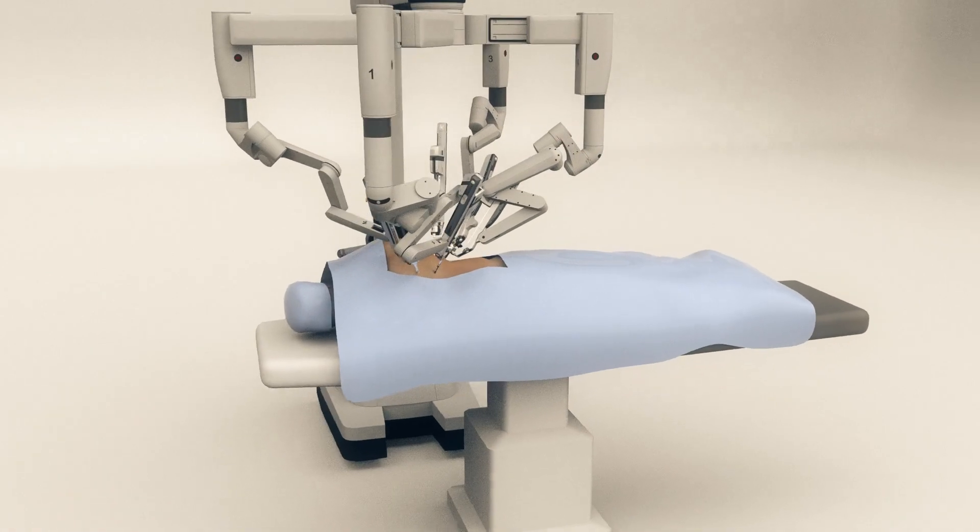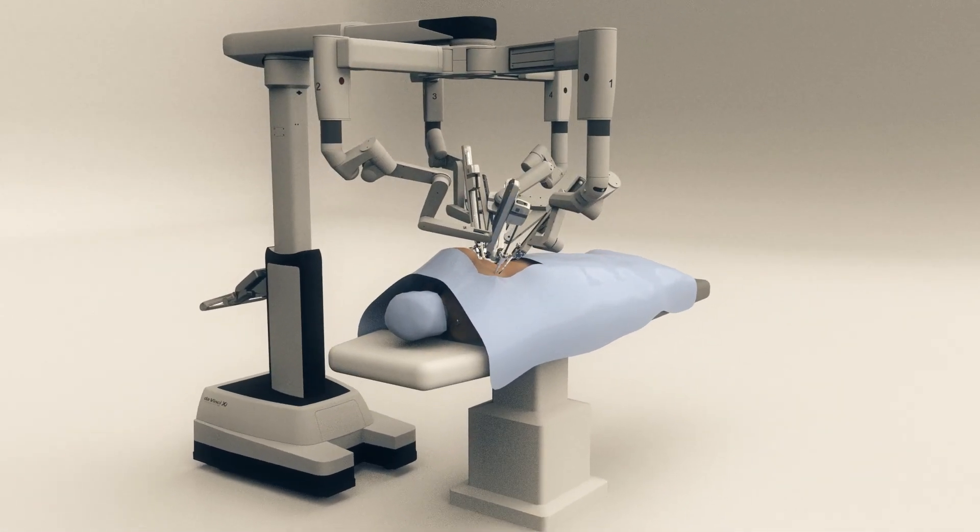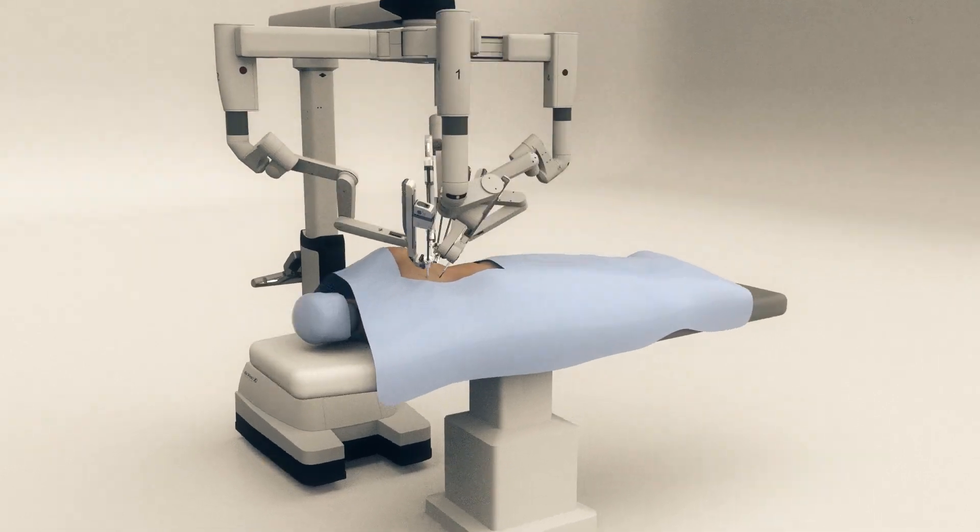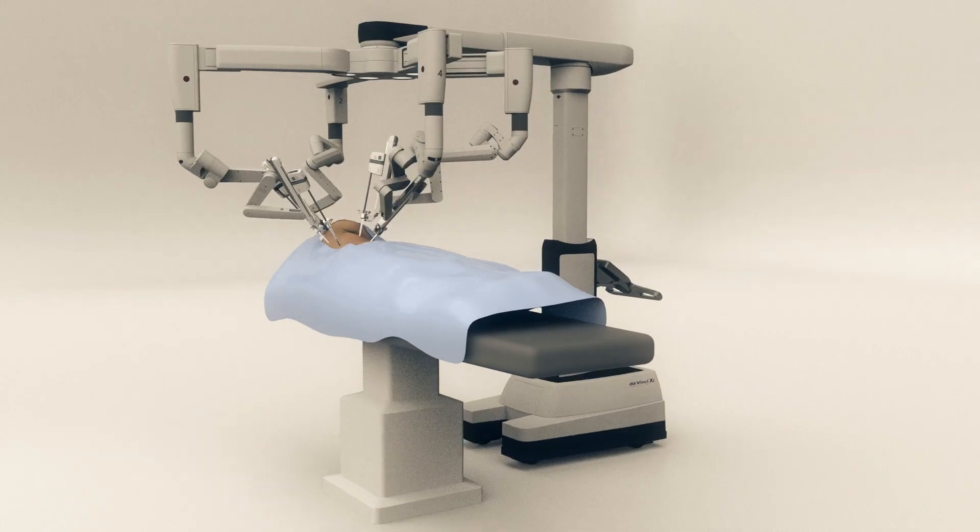A surgical robot, also called da Vinci, has four arms. Three of the arms hold instruments and one holds a camera that provides a magnified three-dimensional view inside the body.